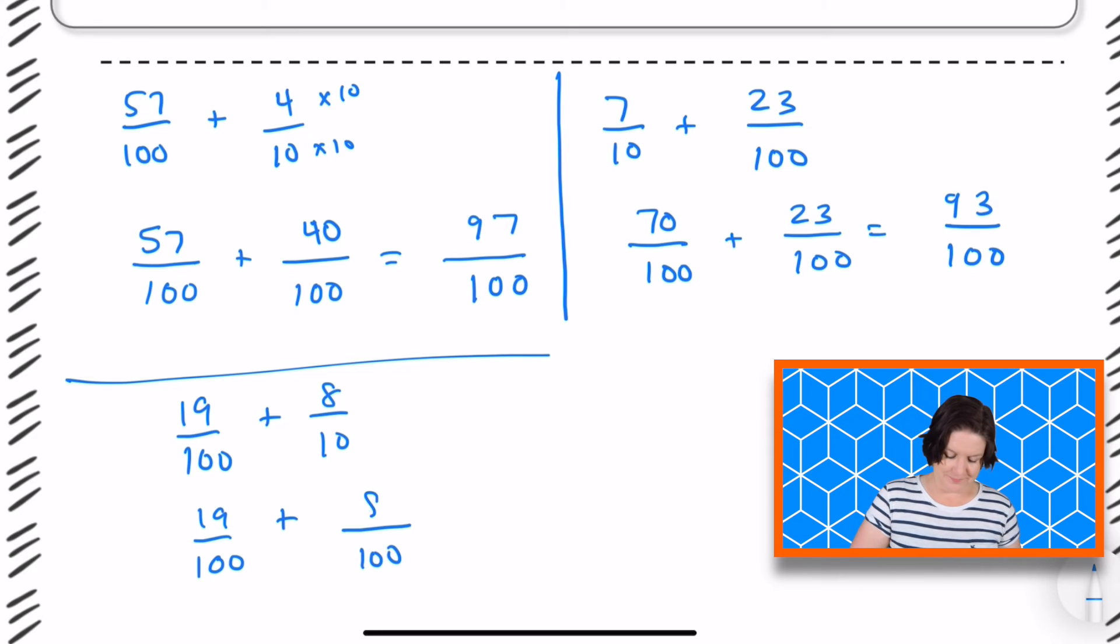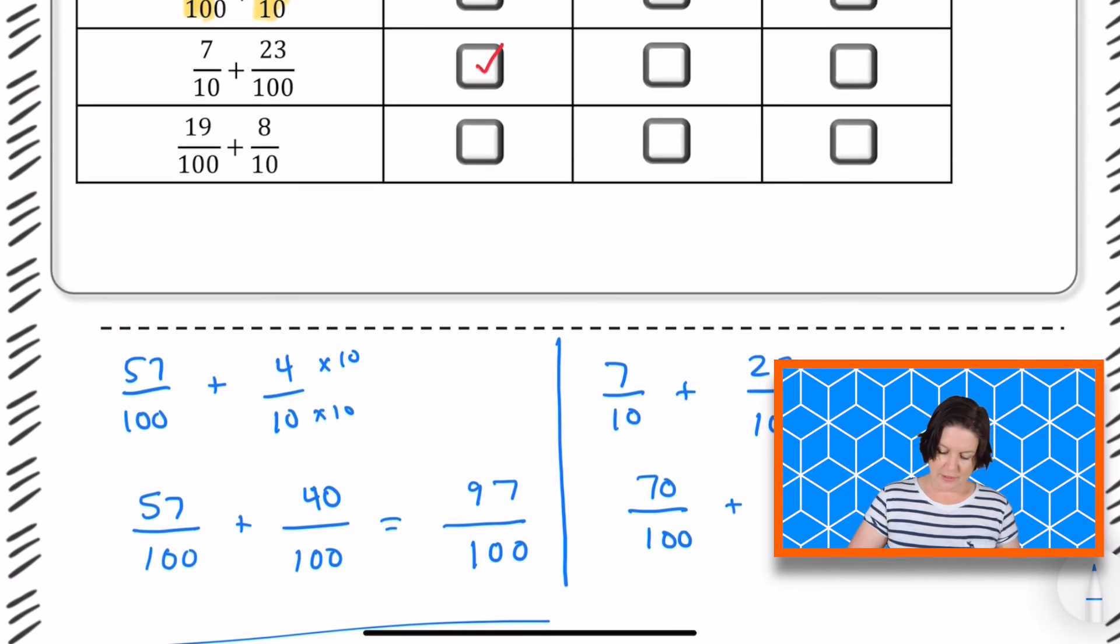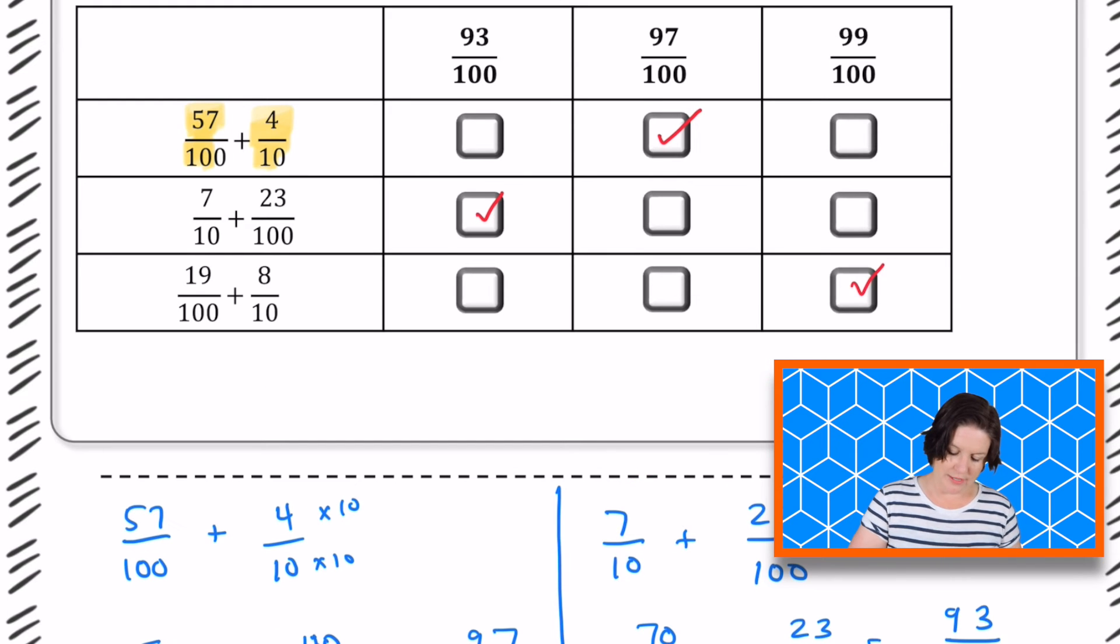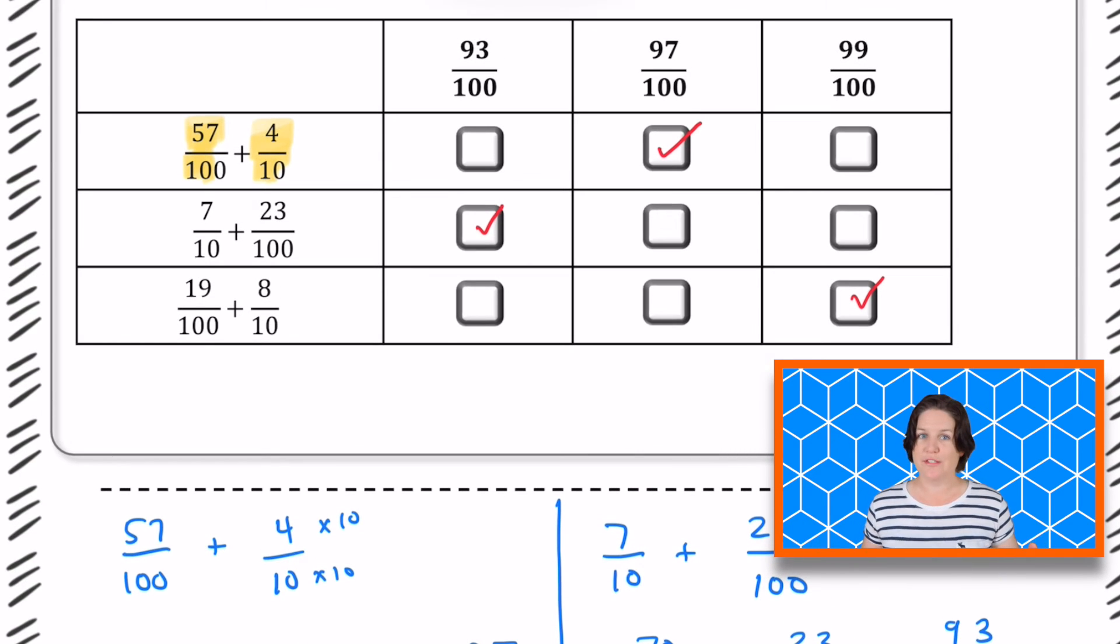80, right? Good. And now when we add those up, 19 hundredths plus 80 hundredths equals how many hundredths? 99. 99 hundredths. Almost a full, a full whole. Alright. So we'll mark that one. So that is how you solve this problem.